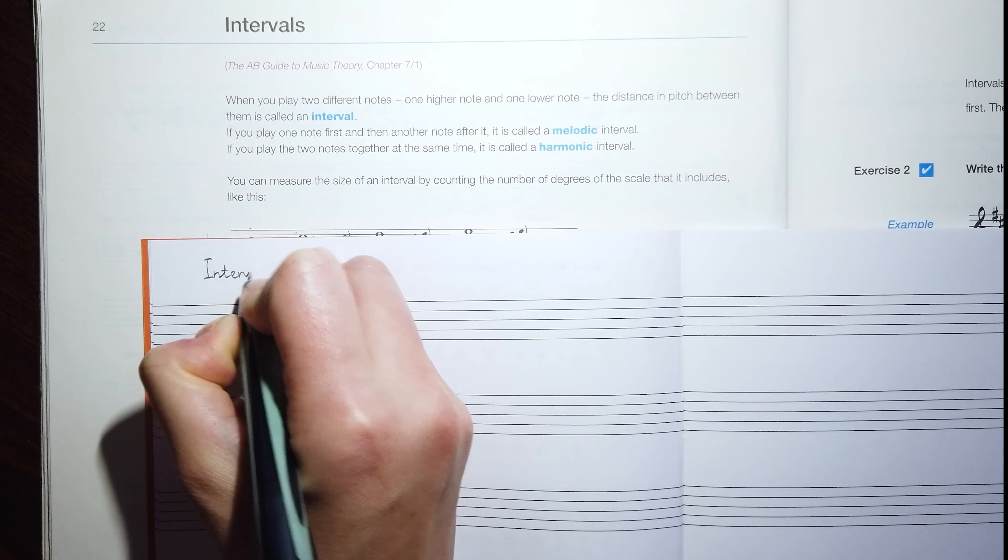We have two options for the interval. If you play two notes together at the same time, it is called a harmonic interval. If you play two notes but one note first and then another, we name it melodic. Which intervals can we find? The closest distance between two notes is the second.